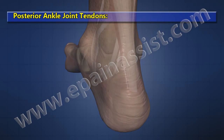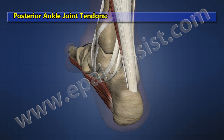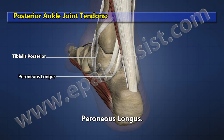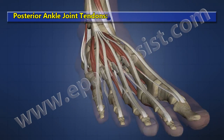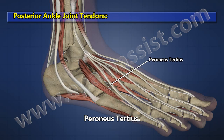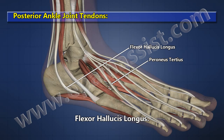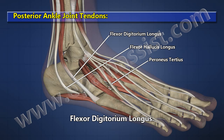Posterior ankle joint tendons include: tibialis posterior, peroneus longus, peroneus brevis, peroneus tertius, flexor hallucis longus, and flexor digitorum longus.